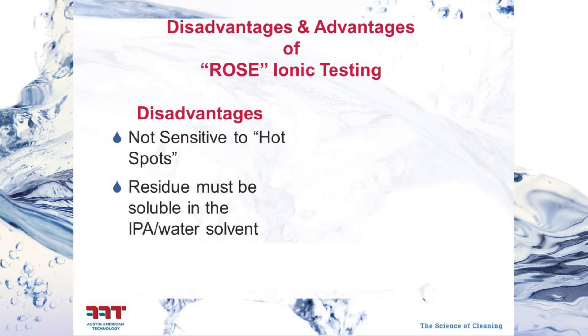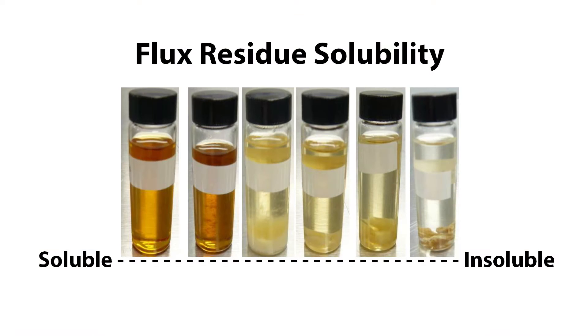Another limitation is that we can't measure residue that isn't soluble in the test fluid. A salt from a potato chip, for example, is very soluble in the water or alcohol typically used. But rosin fluxes — which is what the test was originally designed around — led to isopropyl alcohol and water being used as the standard test solution. Newer fluxes are resin-based and may or may not dissolve in that solution. If the test solvent isn't right, the residue won't dissolve and won't be measured. It's important to have the right solvent.